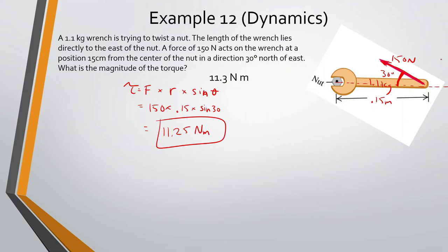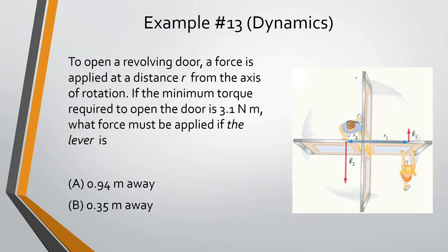What this also shows is if we were to pull straight up, we'd have an angle of 90 degrees, which would give us twice the torque. That makes sense because the more perpendicular you are to the force, the more efficient it's going to be. Alright, let's look at the next example.